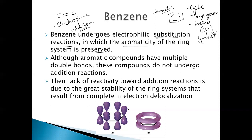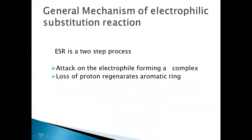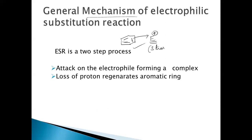So how does benzene undergo electrophilic substitution reactions, and what is the mechanism? It occurs in two steps. The first step involves the attack of the pi electrons of the benzene ring on the electrophile. Benzene is rich in pi electrons and can attack the electrophile — an electron-deficient species — resulting in the formation of a sigma complex. The second step involves the sigma complex losing a proton, resulting in the formation of a substitution product, thereby regenerating aromatic character.